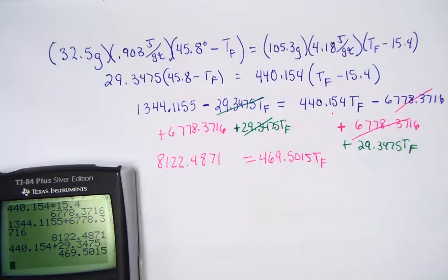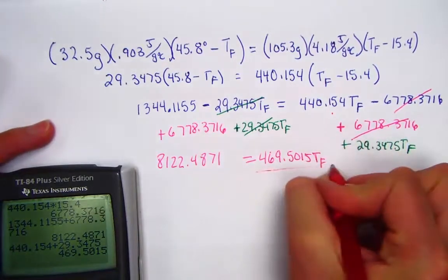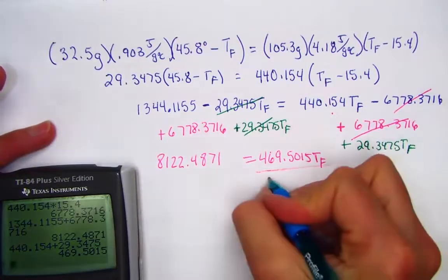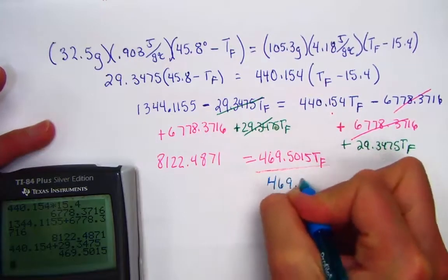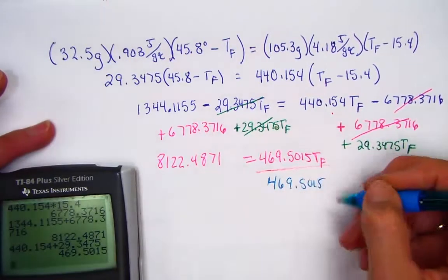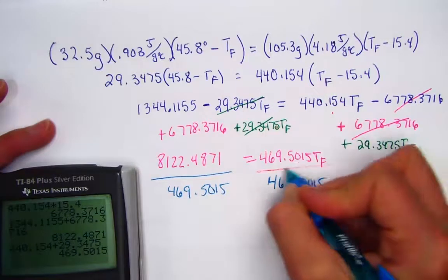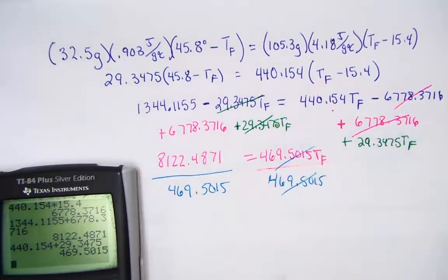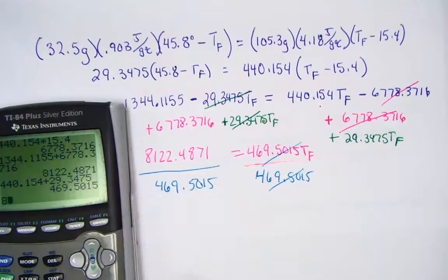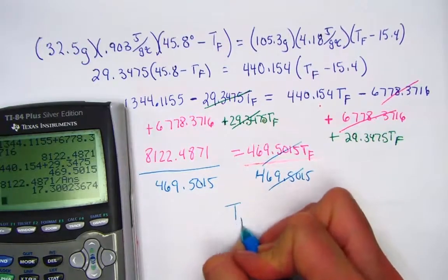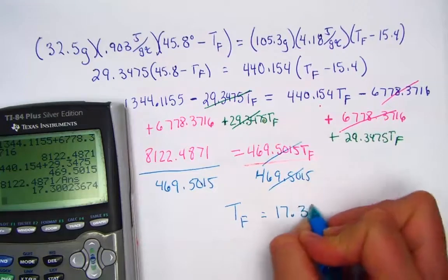To get the variable by itself, we're just simply going to divide. That pen doesn't seem to be working well. Let me grab another. I'm going to divide by 469.5015, and you can see how that will isolate the variable TF. So I'll just hit on my screen 8122.4871 divided by 469.5015, and the final temperature is 17.3 degrees Celsius.